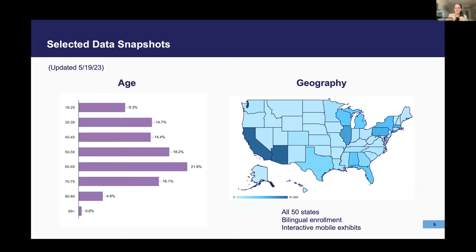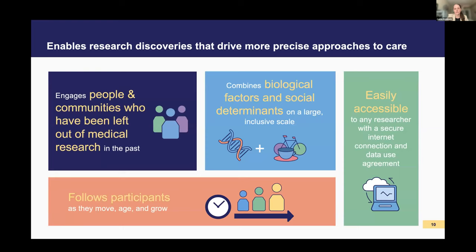Here are two plots: one showing the age distribution and the other showing the geographic density of individuals across the United States. All of Us is tracking a well-balanced distribution across age and geographic area, with participants from all 50 states. The program continues opening new clinic sites around the country, and even has an interactive mobile exhibit that travels the country. The program provides bilingual language support and allows direct enrollment through the All of Us Research Program, working to earn the trust of communities previously disenfranchised by medical research.